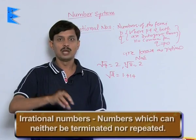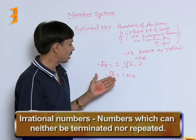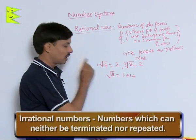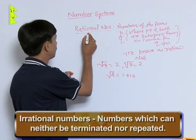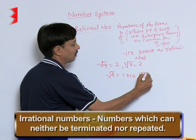Such numbers which can neither be terminated nor repeated are taken in another category after the rational numbers, that is the category of irrational numbers.